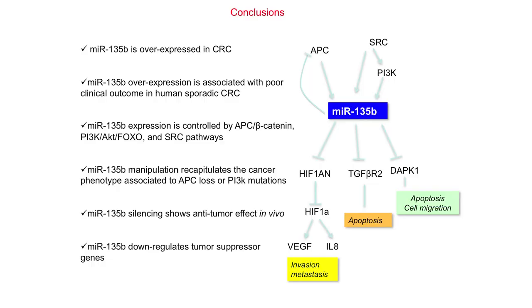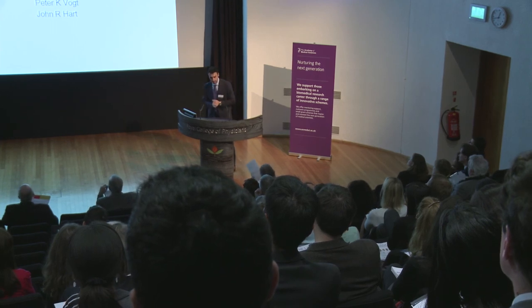In conclusion, we proved that MIR-135b is overexpressed in cancer both in mice and in humans. It's not just a bystander event useful as a biomarker — it's actually driving colon carcinogenesis. By targeting this microRNA, we can achieve a reduction in the number and size of tumors in mice. I want to thank all the collaborators in the study, some in the UK, my Italian colleagues, and most of them in the States.